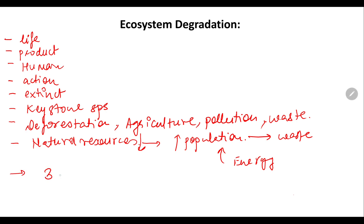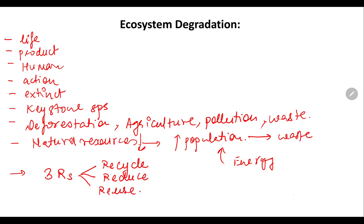We should use our resources sustainably, and for that we should apply the three R's formula: we need to recycle, we need to reduce, and we need to reuse. Following these three R's in our day-to-day life is going to protect the ecosystem. Also, we should avoid the use of plastics, since plastic is not degradable.